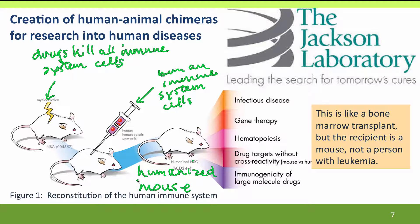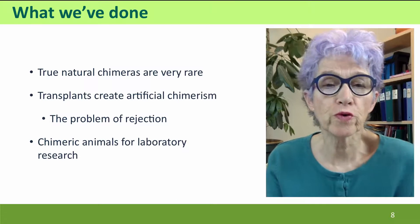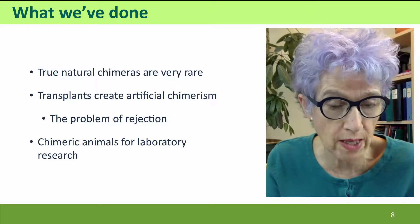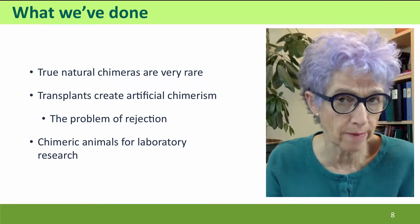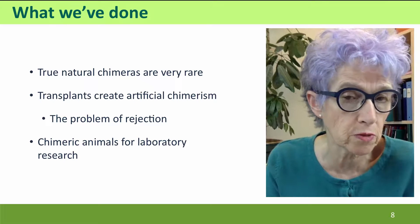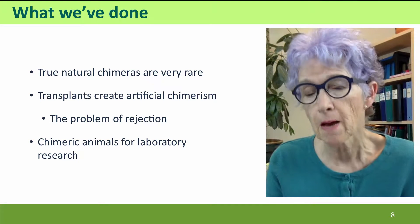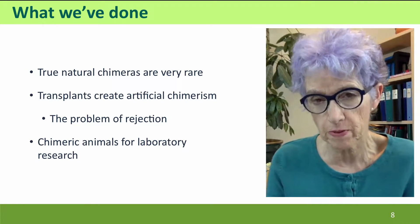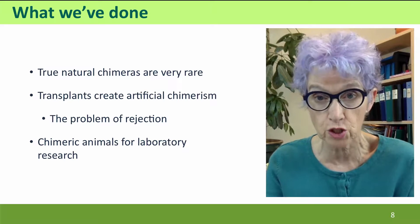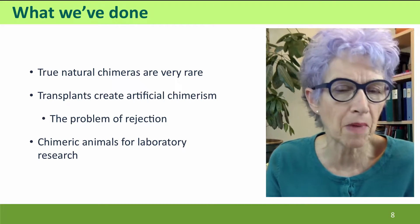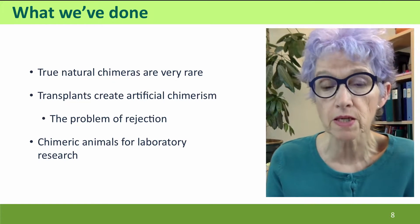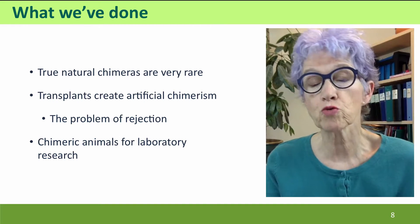It's important to realize that this mouse is humanized only with respect to the cells of its immune system — in every other aspect, it's a normal mouse. So we've talked about natural chimeras arising by accidents of fertilization, artificial chimerism created medically through transplants and the problem of rejection due to mismatched alleles for cell surface proteins especially at the major histocompatibility complex genes, and creating humanized mice with a completely human immune system.